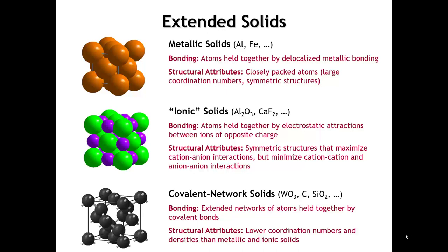So we want to minimize the cation-cation and anion-anion interactions. That tends to lead to structures which have rather high symmetry and oftentimes large coordination numbers, although not as large as we see in the metallic solids.